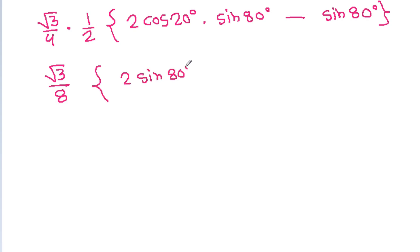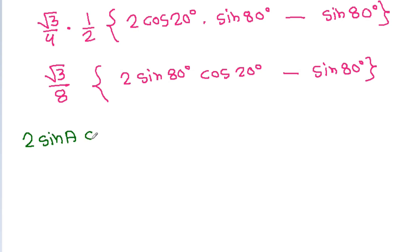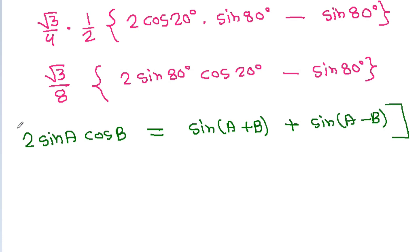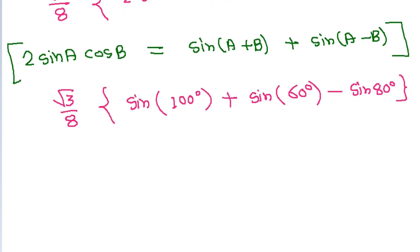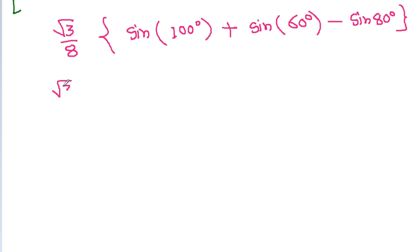We know that 2 sinA cosB = sin(A + B) + sin(A − B). So 2 sin 80° cos 20° becomes sin(80° + 20°) + sin(80° − 20°), which is sin 100° + sin 60°. The expression is now √3/8 times (sin 100° + sin 60° − sin 80°).